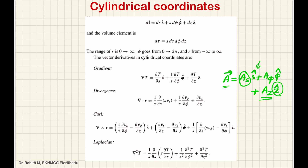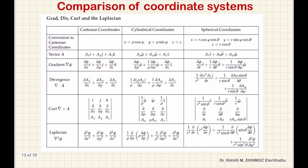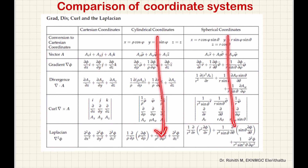This spherical polar coordinate system and cylindrical coordinate system can be compared using a table. The table lists Cartesian coordinate system, cylindrical coordinate system, and spherical coordinate system side by side, showing the expressions for gradient, divergence, curl, and Laplacian in each.